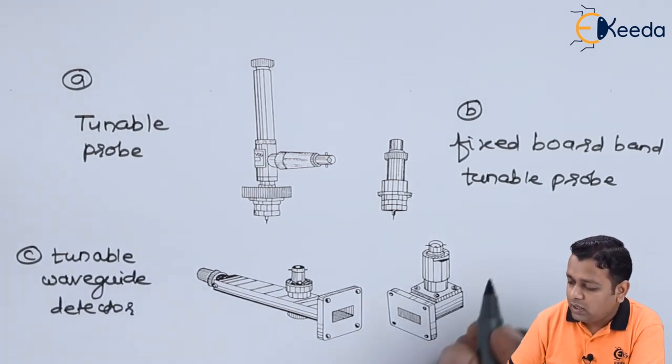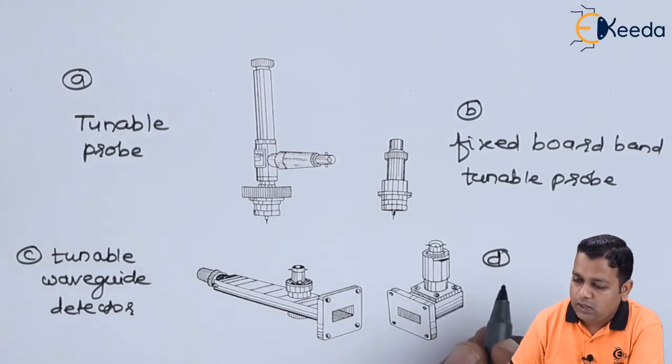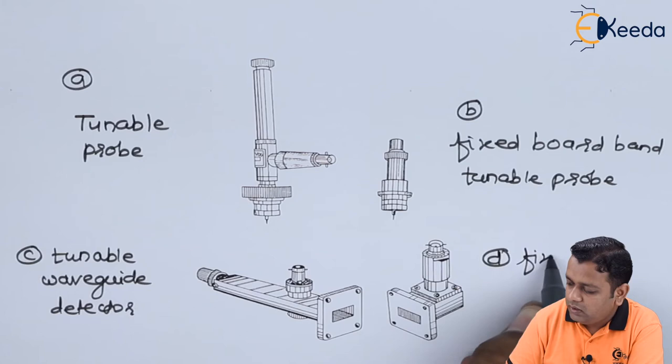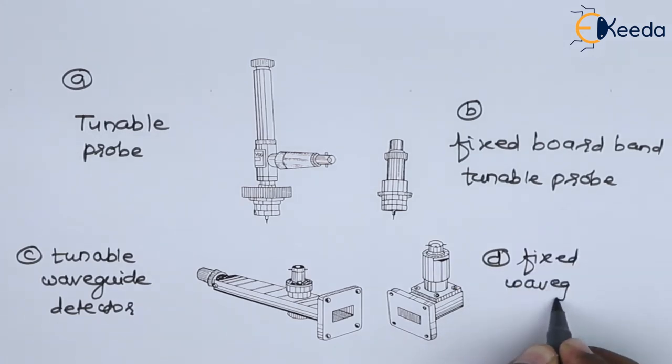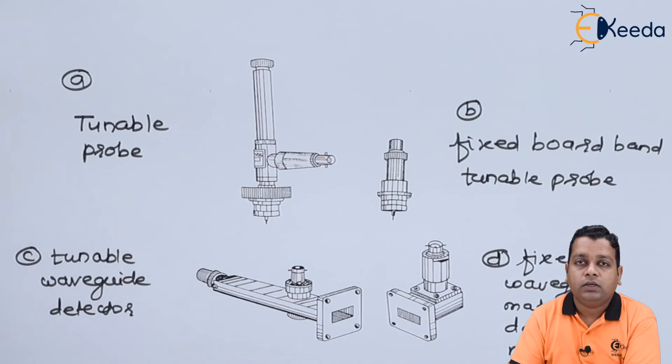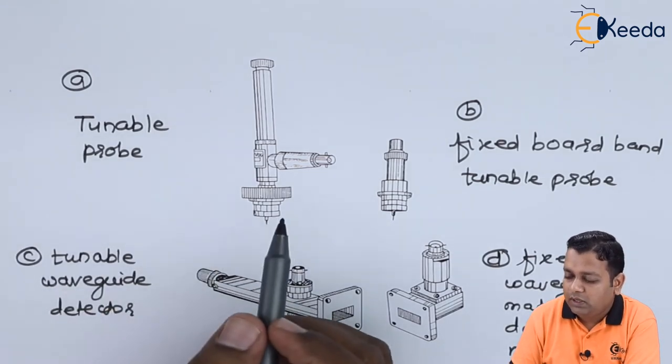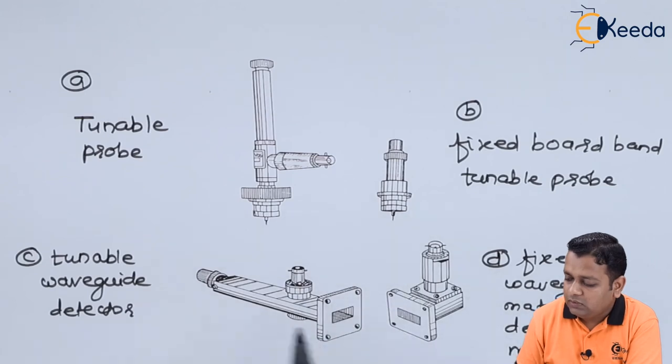Whereas in the last part, that is part D of the figure, we have fixed waveguide match detector mount. So these are the various views with respect to the tunable detector. This can be used in the practical setups while working on microwave engineering experiments.